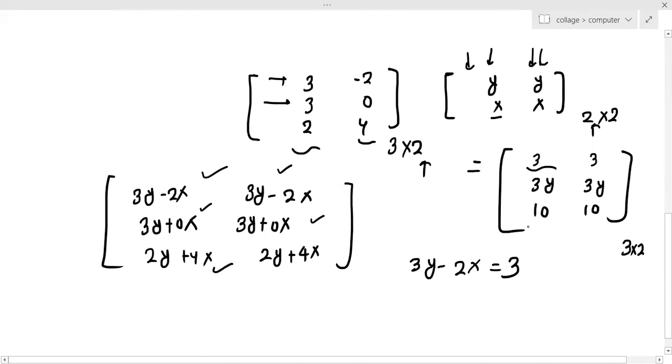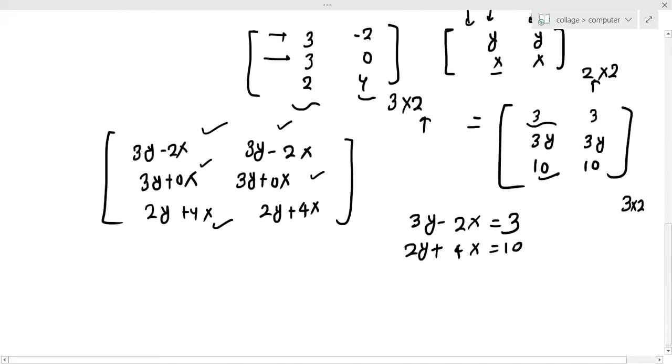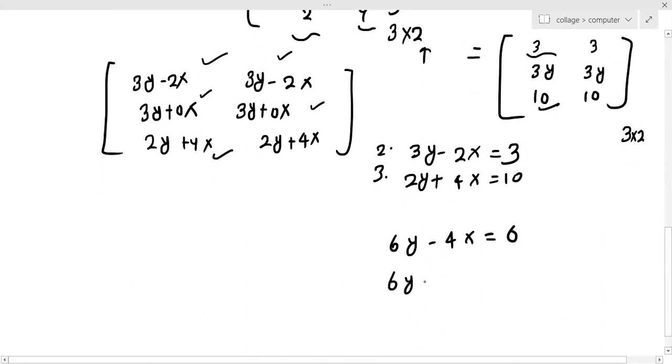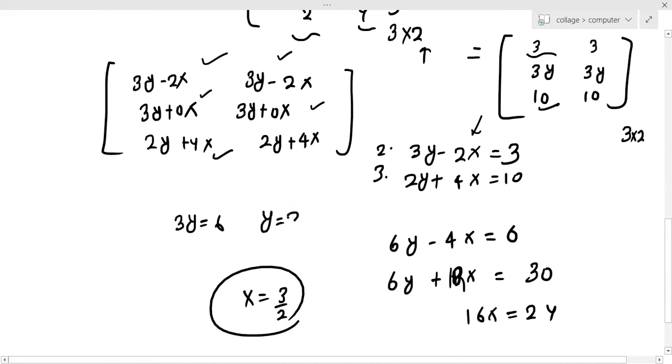We will change 3y minus 2x. x is equal to basically 3 by 2 and here 3y is equal to 6 so y is equal to basically 2. So this way we can simply use product to solve. So I have taught you the product. Like and subscribe.